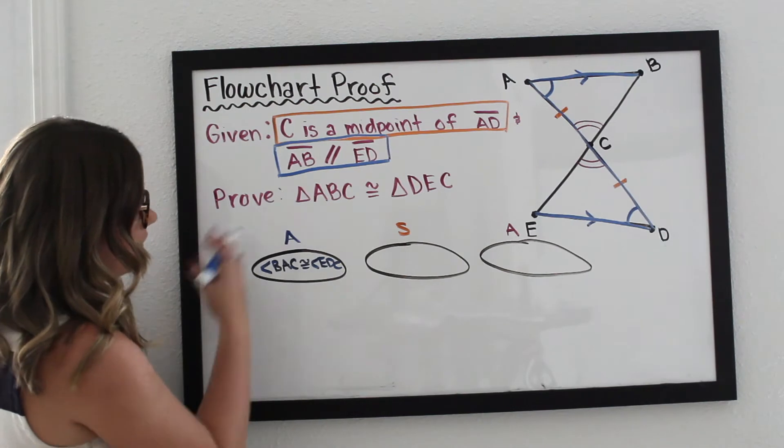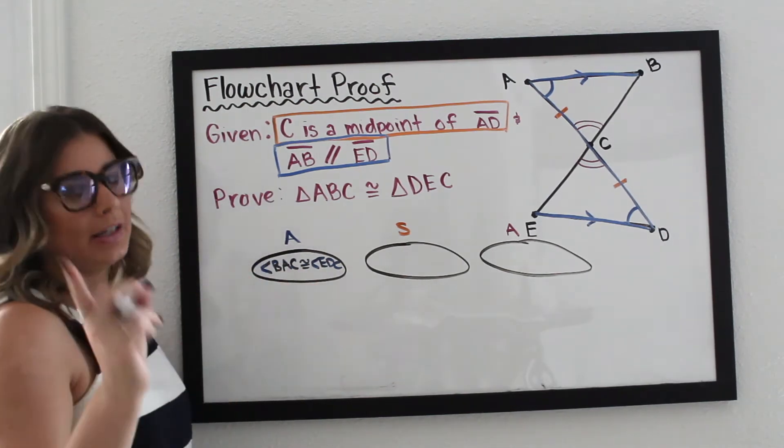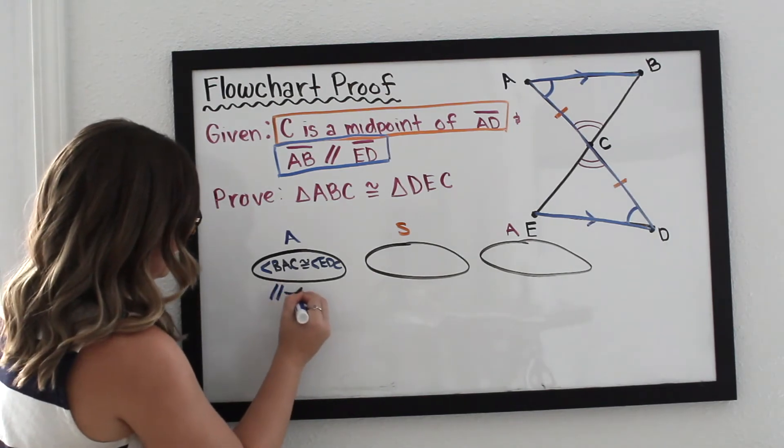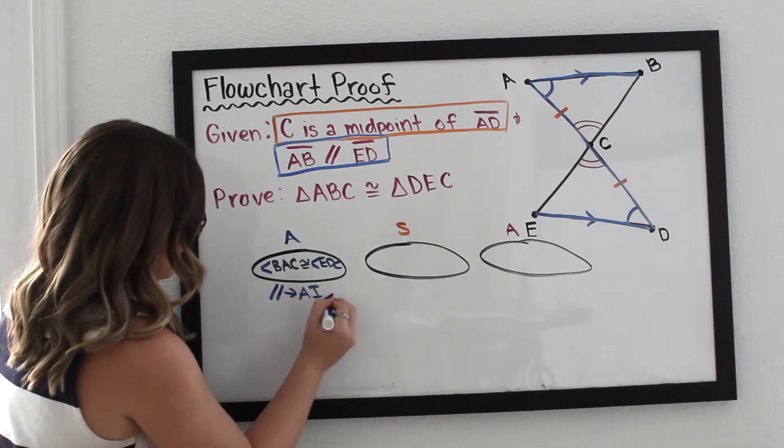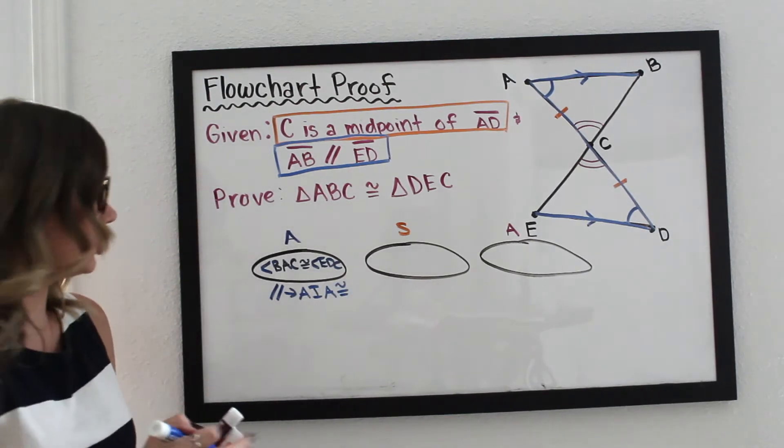So that's going to be our reason under here for how we know that those are congruent. I like to use symbols in the video—if you watched my other one you'll see—but parallel lines, therefore alternate interior angles are congruent. That's how I write that in shorthand.